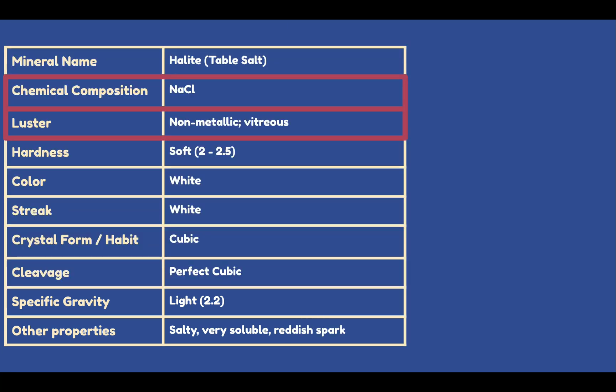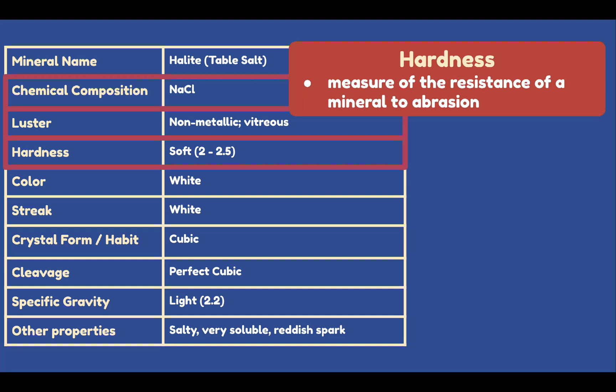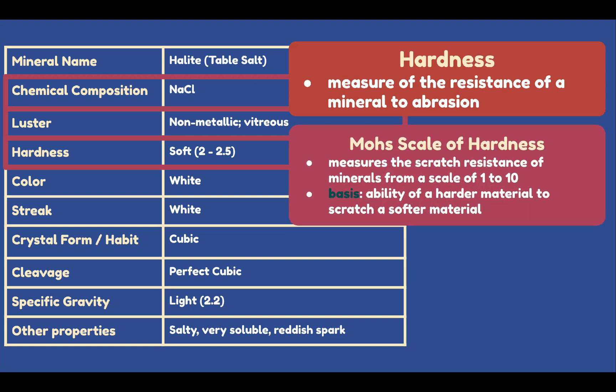Next, we have hardness. Halite is soft, with a hardness number of 2 to 2.5. Hardness is basically the measure of the resistance of a mineral's surface to abrasion. To test the hardness of minerals, a scale designed by German geologist and mineralogist Friedrich Mohs is used — the Mohs Scale of Hardness. It measures the scratch resistance of various minerals on a scale of 1 to 10, based on the ability of a harder mineral to scratch a softer one.